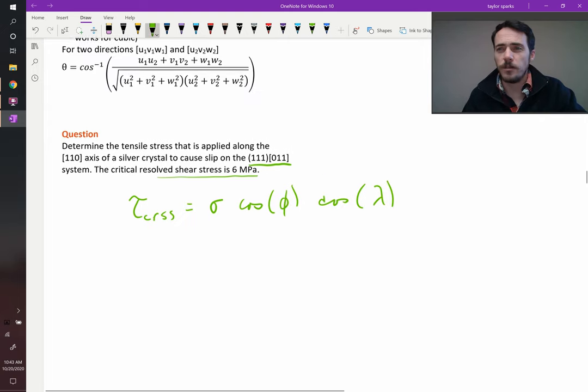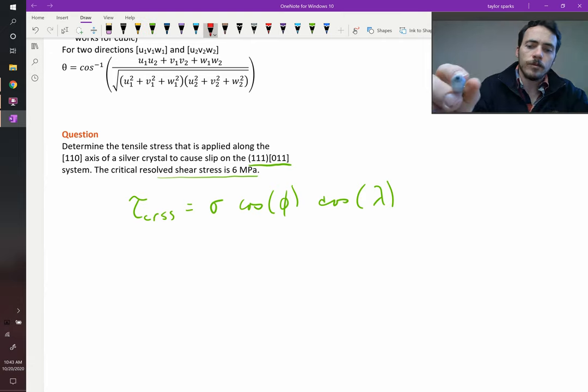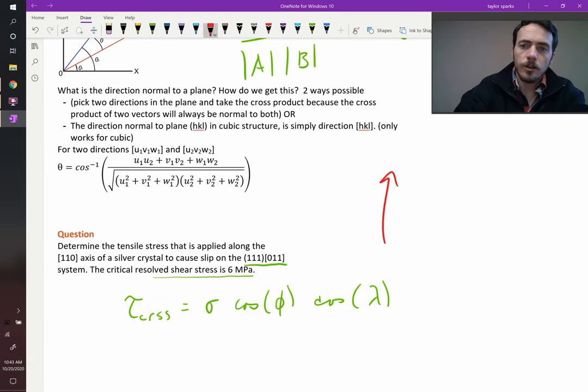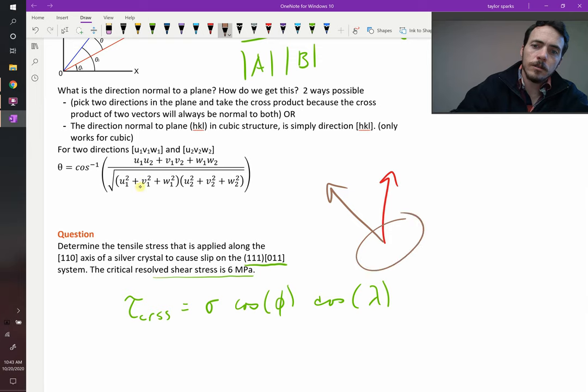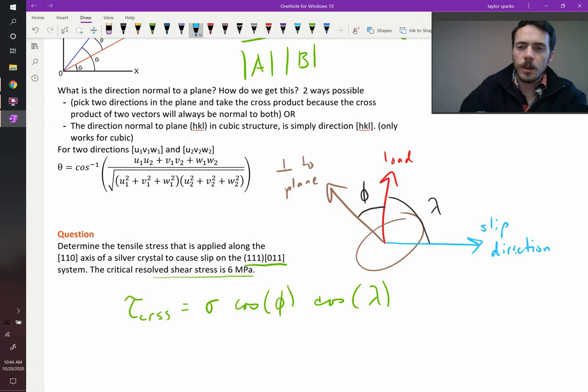So how do we define phi and lambda again? Well, you've got your loading direction, you've got the normal to the plane, and then you've got your slip direction. We said that this angle between the normal to the plane and the loading direction was phi, and the angle between the loading direction and the slip direction is lambda. So there's our load, the normal to our plane, and the slip direction labeled.